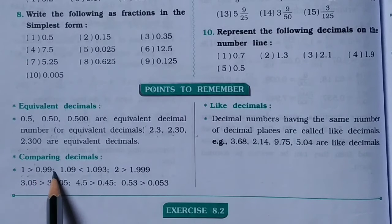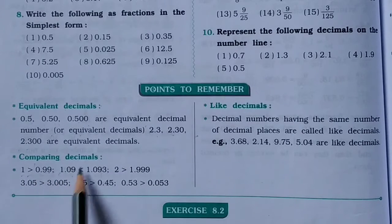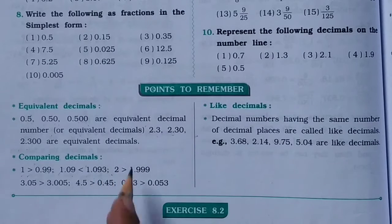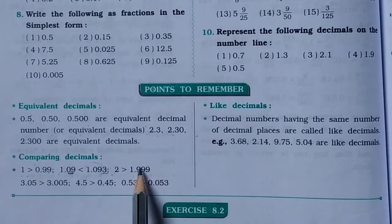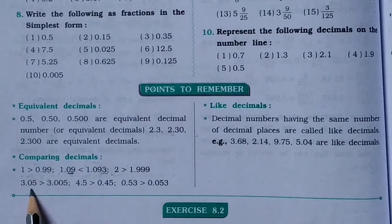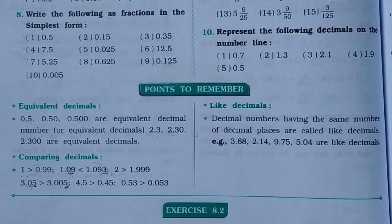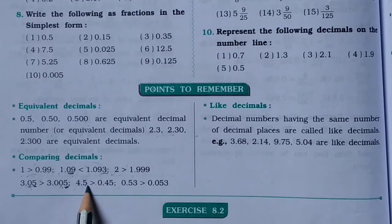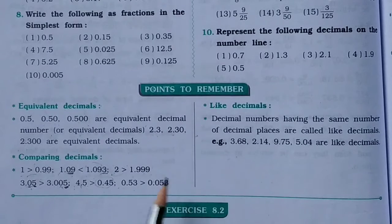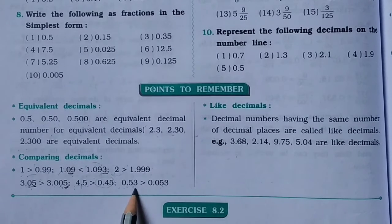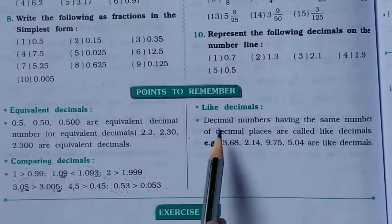Comparing decimals: 1 is greater than 0.98 because 0.98 comes before 1. 1.093 is greater than 1.09 because it has an extra digit 3. 2 is greater than 1.999 because 2 comes after 1.999. 3.05 is greater than 3.005 because the first decimal digit of 3.05 is 5 versus 0. 4.5 is greater than 0.45. 0.53 is greater than 0.053.